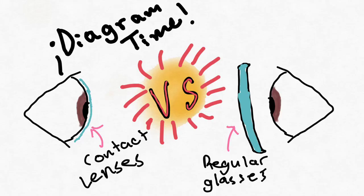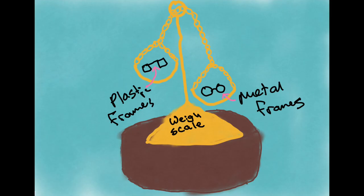In the late 19th century, the first contact lenses were developed, providing an alternative to glasses for those with vision impairments. The 20th century saw significant advancements in glasses technology, with the development of new materials and lenses. In the early 1900s, plastic frames were introduced.